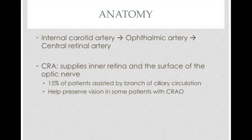Let's go to a quick overview of the anatomy. The ophthalmic artery is actually a branch of the internal carotid artery, which eventually gives rise to the central retinal artery. The central retinal artery supplies the inner part of the retina and the surface of the optic nerve. The outer part is supplied by the choroidal vessels. 15% of patients actually have a branch of ciliary circulation that helps provide blood supply to the inner retina. So in patients who have this, they have the benefit of some preservation of vision in the case that they do have occlusion of the central retinal artery.